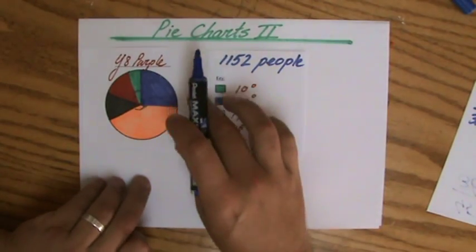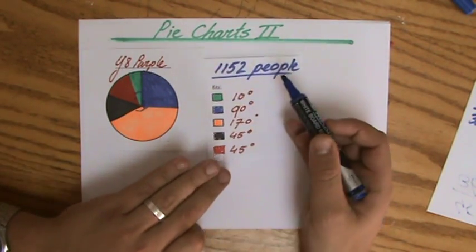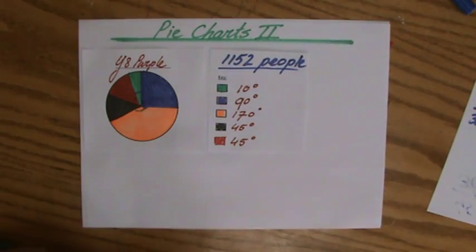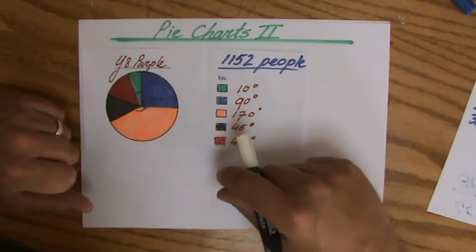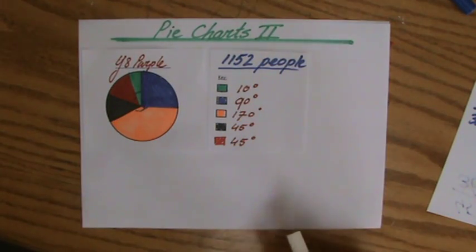I've asked 1152 people in total what their favorite color is, and that's the resulting pie chart. But now the question is: how many people actually like green, and how many people actually like blue, and the rest? I'm going to show you how to do that.